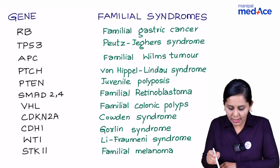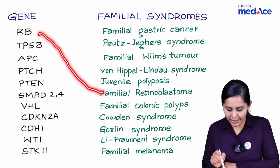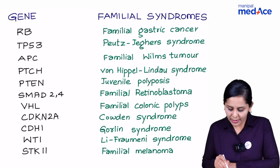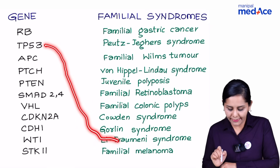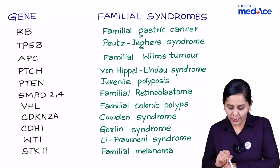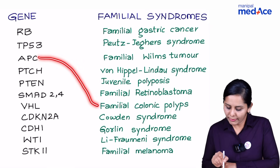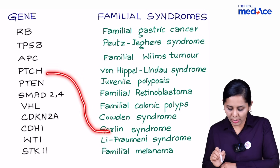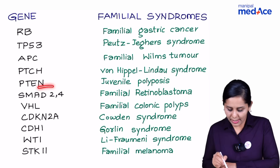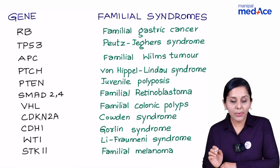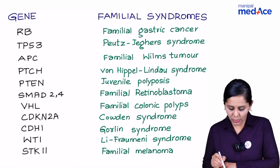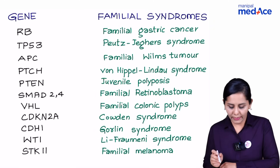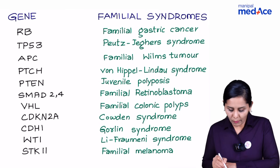RB gene is for familial retinoblastoma. TP53 is associated with Li-Fraumeni syndrome. APC for familial colonic polyps. PTCH is for Gorlin syndrome. PTEN is for Cowden syndrome. SMAD2 and 4 with juvenile polyposis. VHL for Von Hippel-Lindau syndrome.